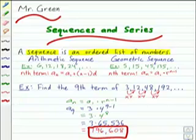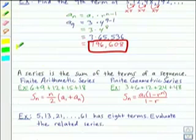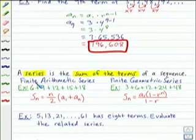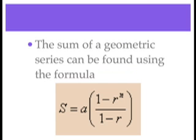Okay, let's move on and talk about series. A series is the sum of the terms of a sequence. You could have a finite arithmetic series or a finite geometric series. And here are formulas to find the sum of each type. In general we can find the sum of a geometric series using this formula.